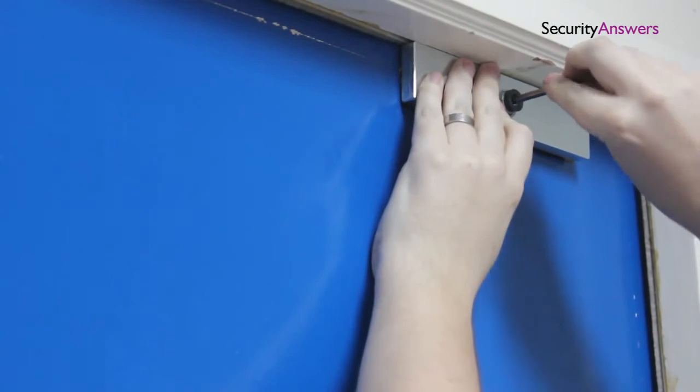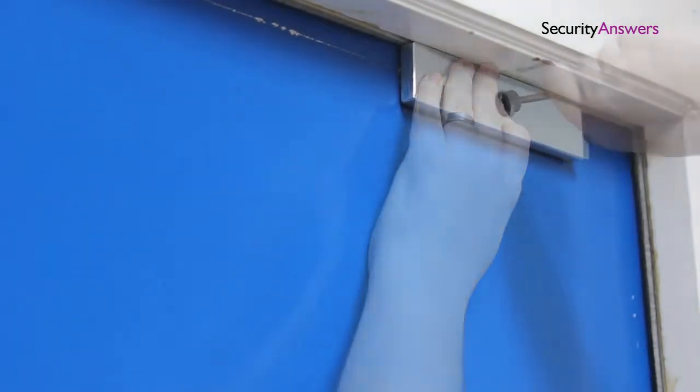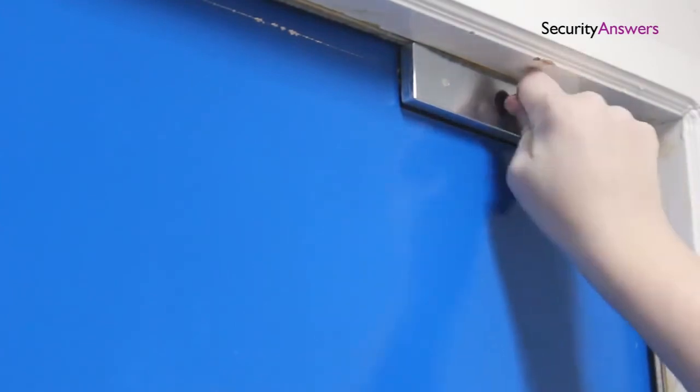Before you do your final tightening of your screws close the door to double check the fitting of your lock. If everything is okay go ahead and tighten your screws.